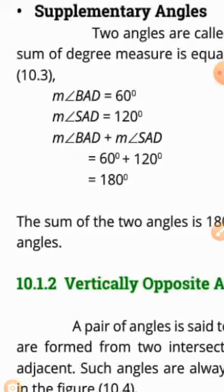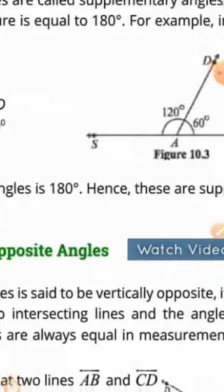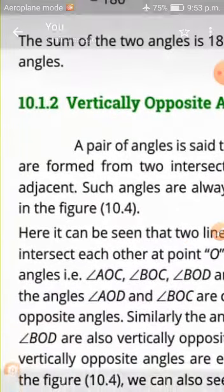Keep in mind: if you add two angles — not three, just two — and the result is 180 degrees, then they are supplementary angles. And if the result is 90 degrees, then they are complementary angles. The sum of two angles is 180 degrees — hence these are supplementary angles.